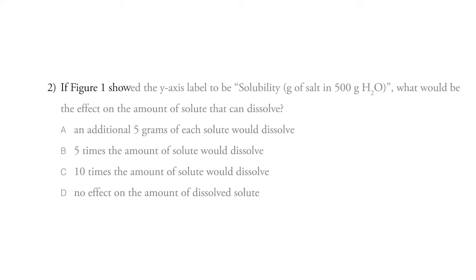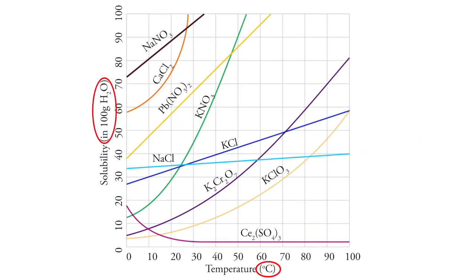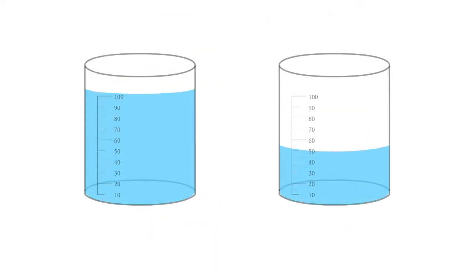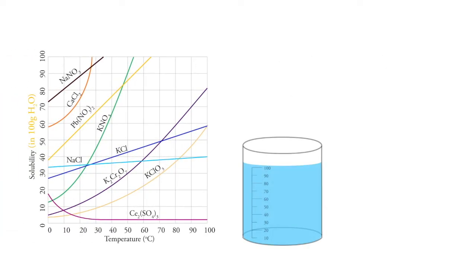Number two, if figure one showed the y-axis label to be solubility in grams of salt in 500 grams of water, what would be the effect on the amount of solute that can dissolve? So basically, when we're looking at the graph, we have to understand it has units. And so the units here are the grams of salt relative to some amount of water. And we have to pick a certain amount of water because obviously if we have twice as much water, we can dissolve twice as much salt. So if we're talking about how much can the water take at 100 grams, that's our baseline, that's what we're looking at in this chart.